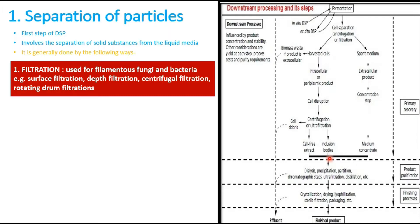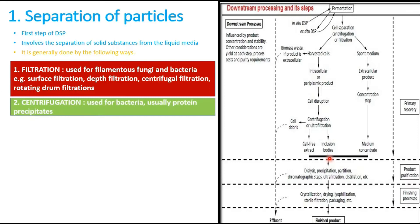Filtration is used mainly for the separation of filamentous fungi and bacteria. Various types can be used: surface filtration, depth filtration, centrifugal filtration, or rotating drum filtration. The second method is centrifugation, which is used for the separation of bacteria; protein precipitates can also be separated by centrifugation.